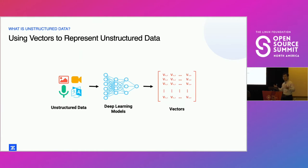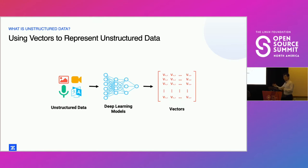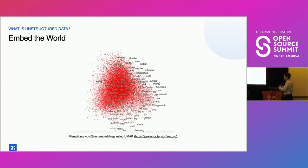How do we represent unstructured data and turn it into something a computer can store and index? We do it through machine learning and deep learning models. In many of these models there are intermediate layers, and those intermediate layers end up being a very good representation of your input data — the results are called embeddings. The idea is that you can take some input data, embed it into a very large space, and have strong semantics across it.